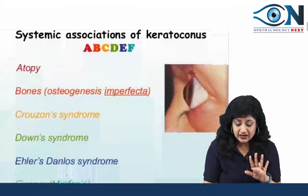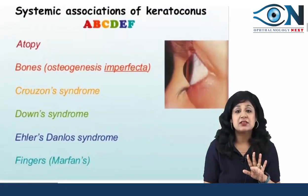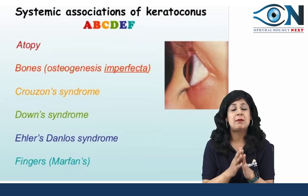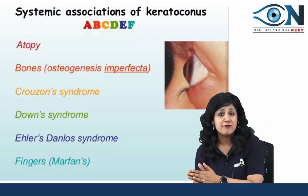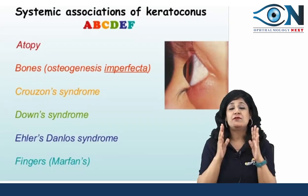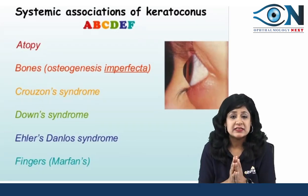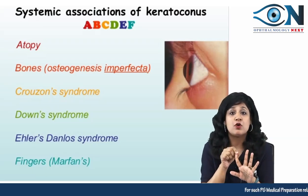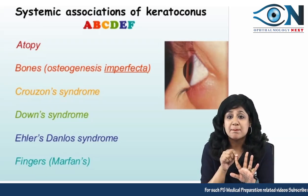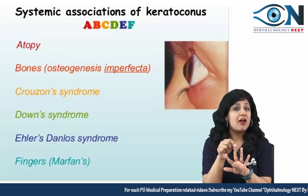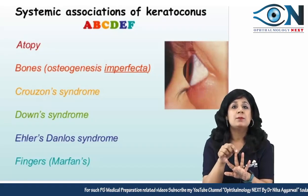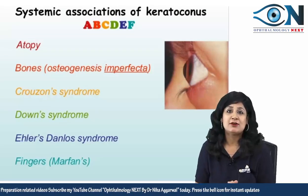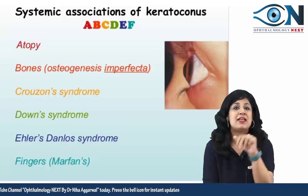Now there are certain systemic associations of keratoconus that can be remembered with A B C D E F, which are very useful in solving clinical scenarios. A for atopy, B for bones — we have osteogenesis imperfecta, C for Crouzon syndrome, D for Down syndrome, and E for Ehlers-Danlos syndrome.